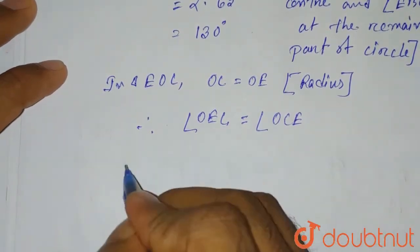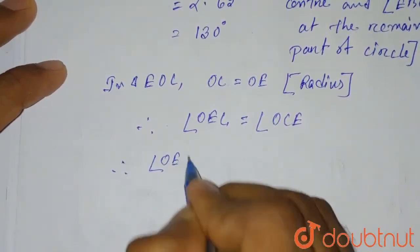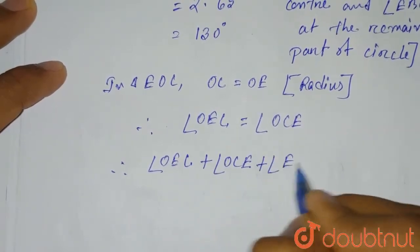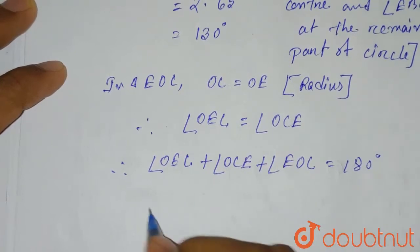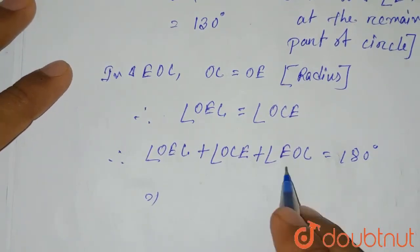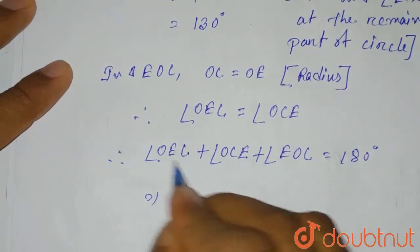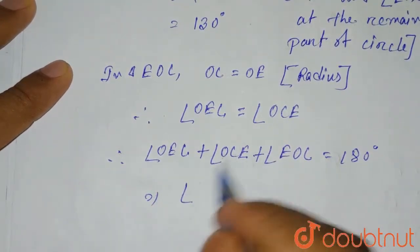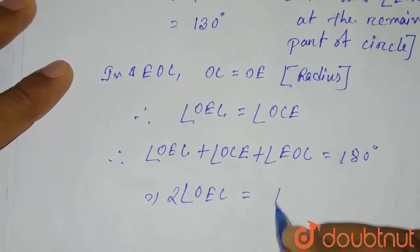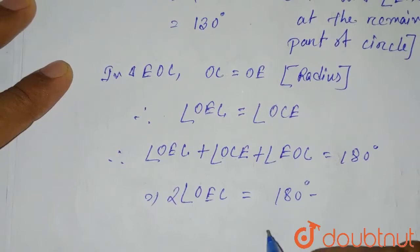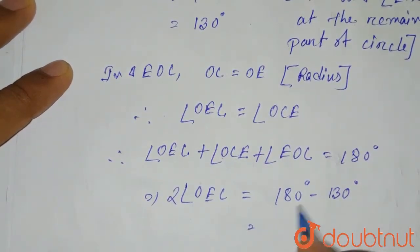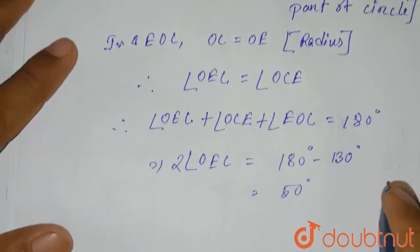Therefore, angle OEC equals angle OCE. The total angle of the triangle is 180 degrees, so we write: angle OEC plus angle OCE plus angle EOC equals 180 degrees. Since angle OEC and angle OCE are equal, we get 2 times angle OEC equals 180 degrees minus 130 degrees equals 50 degrees.